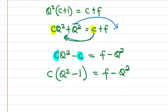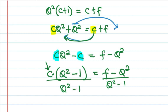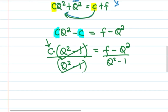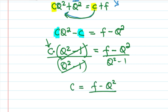So we need to have C on its own. We are going to divide both sides by (Q squared minus 1). This term and that term will cancel, leaving C equals (F minus Q squared) over (Q squared minus 1).